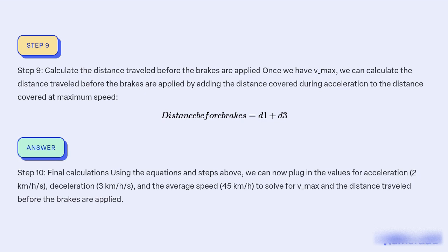Step 10: Final calculations. Using the equations and steps above, we can now plug in the values for acceleration (2 km/h/s), deceleration (3 km/h/s), and average speed (45 km/h) to solve for v_max and the distance travelled before the brakes are applied.